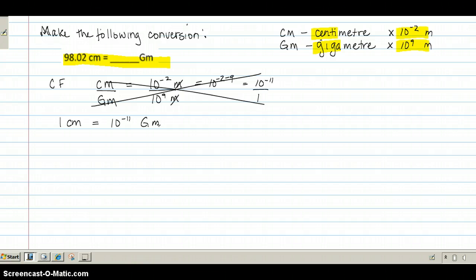So now we have to convert the 98.02 cm, so 98.02 cm. In order to make the units cancel, I need to have the 10 to the minus 11 gigameters on the top and the 1 cm on the bottom.